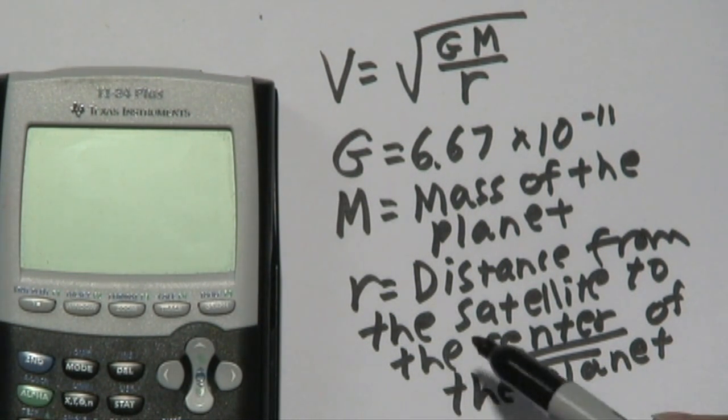But once you plug all three of these numbers in, you'll definitely find your orbital velocity, otherwise known as your circular velocity. So I'm Jimmy Chang, and that's how you calculate orbital velocity.